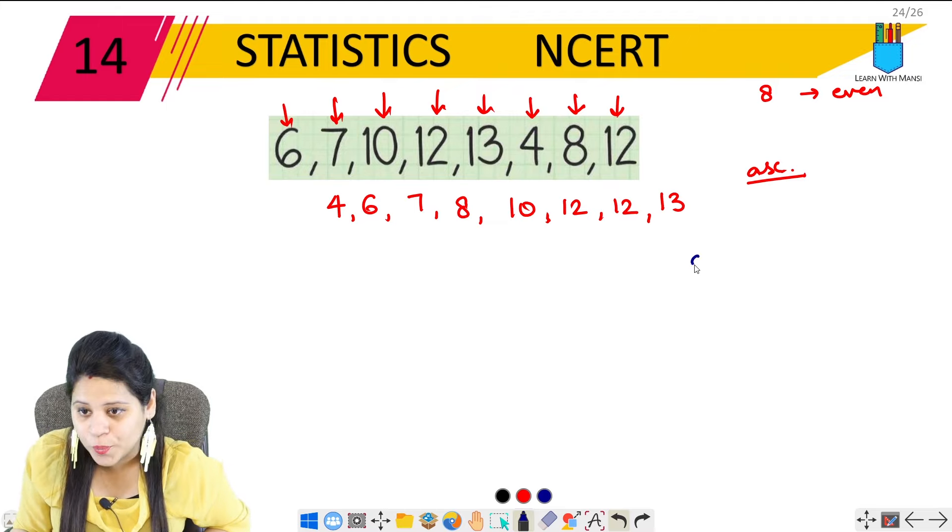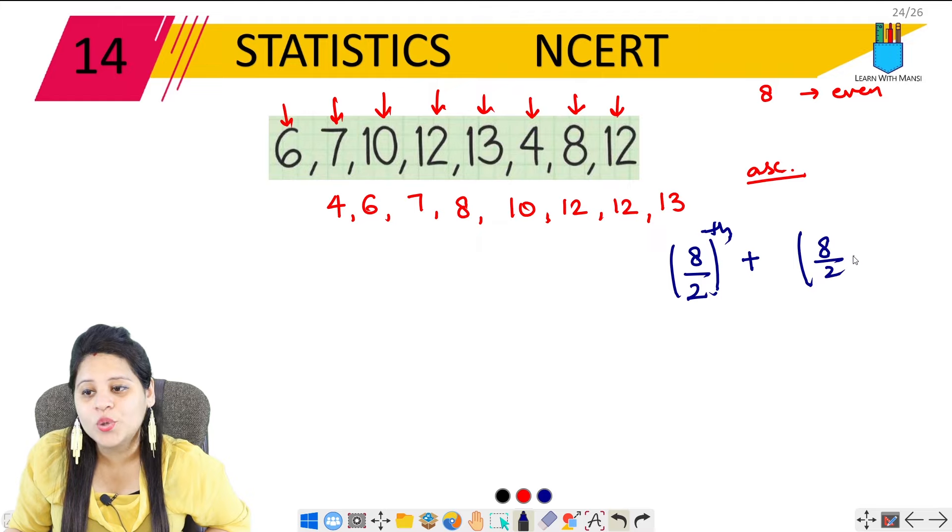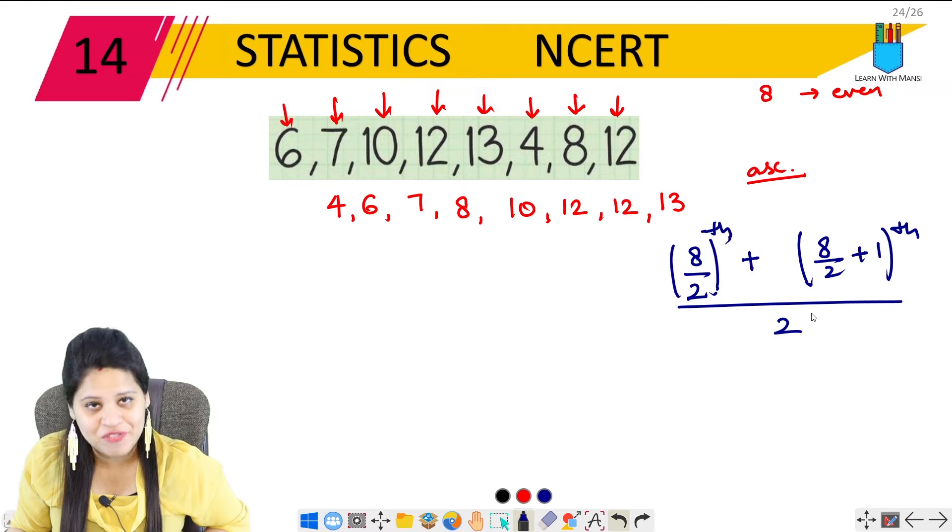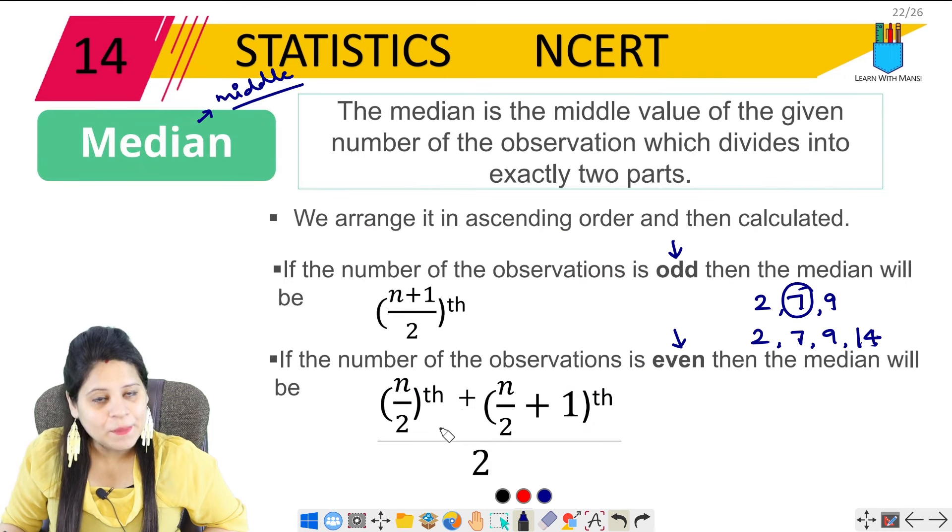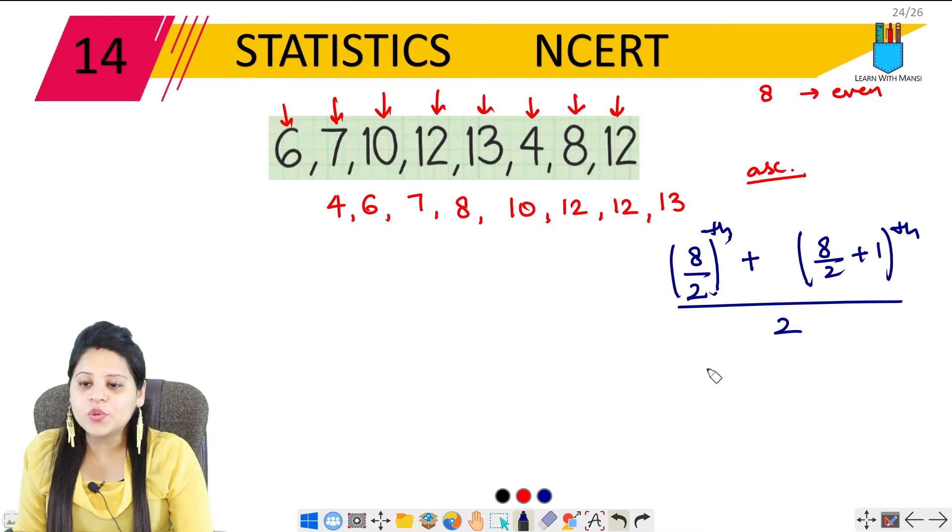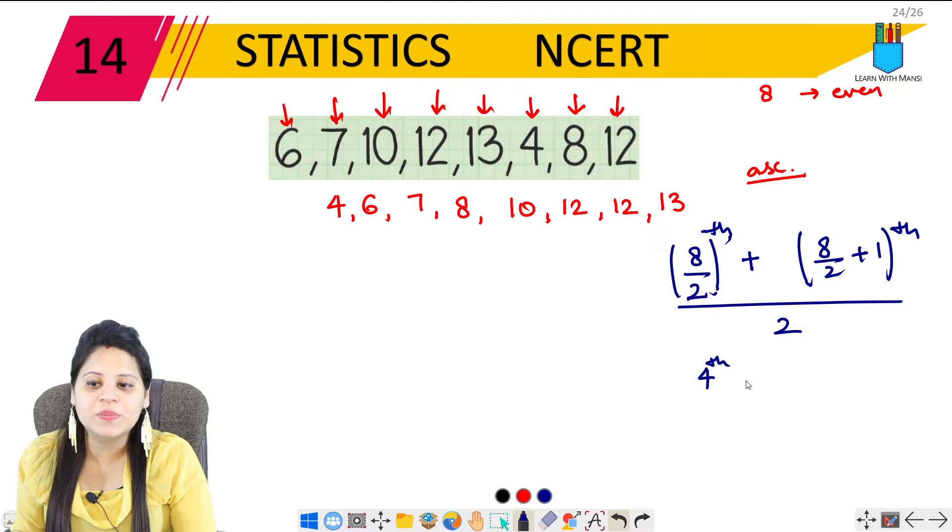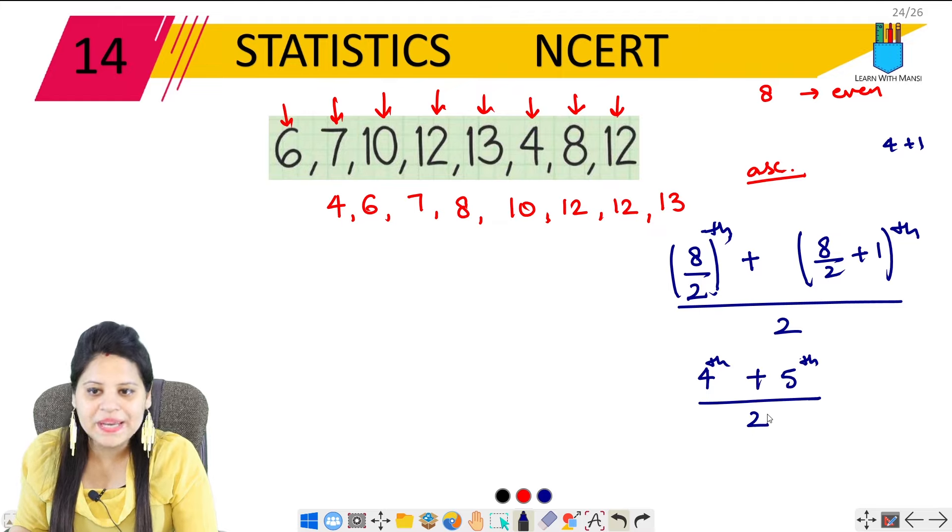So it's simple when it's odd. Now if it's even number of observations, like here: 6, 7, 10, 12, 13, 4, 8, 12. How much is it? 8 number of digits which is an even number. Let's arrange the first thing: 4 will come first in ascending order. After 4 we have 6, then 7, then 8, then 10, then 12, then 12 again, then last we have 13.